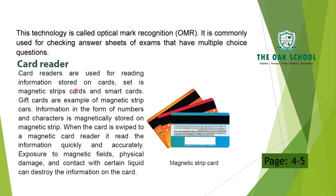Card readers are used for reading information stored on cards. There are two types: magnetic strip cards and smart cards. Card readers are devices that read these cards. If you go to a shopping mall to make a payment, you will see a device in which cards are inserted — that is a card reader machine. You can easily see it at a mall or shop.